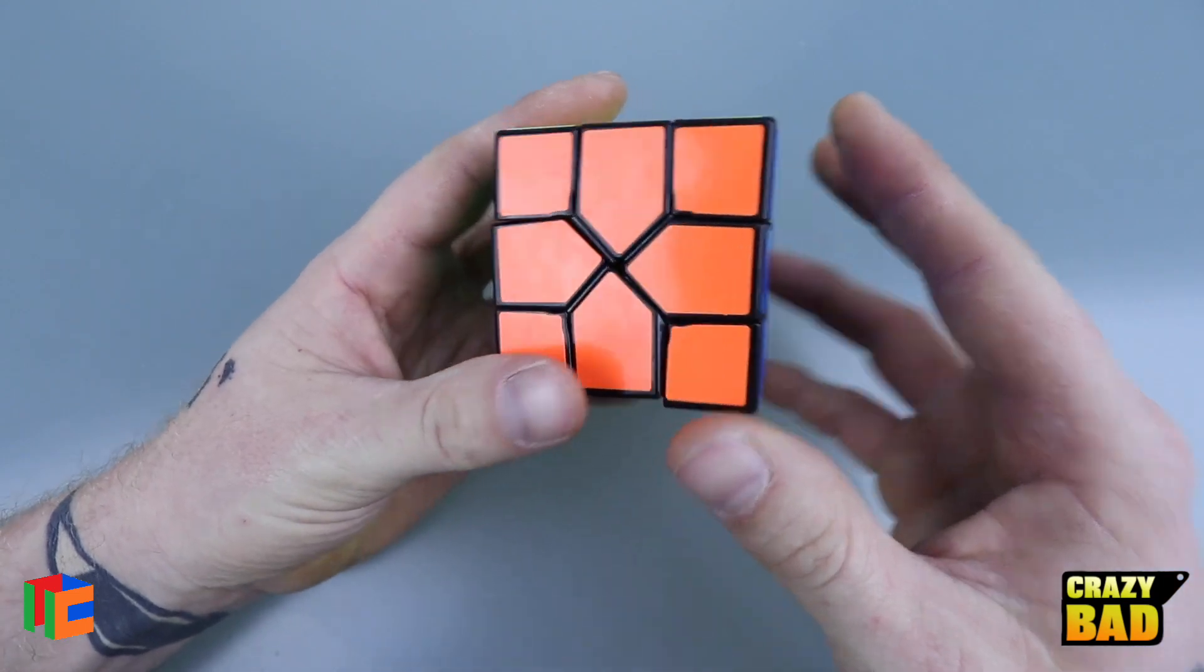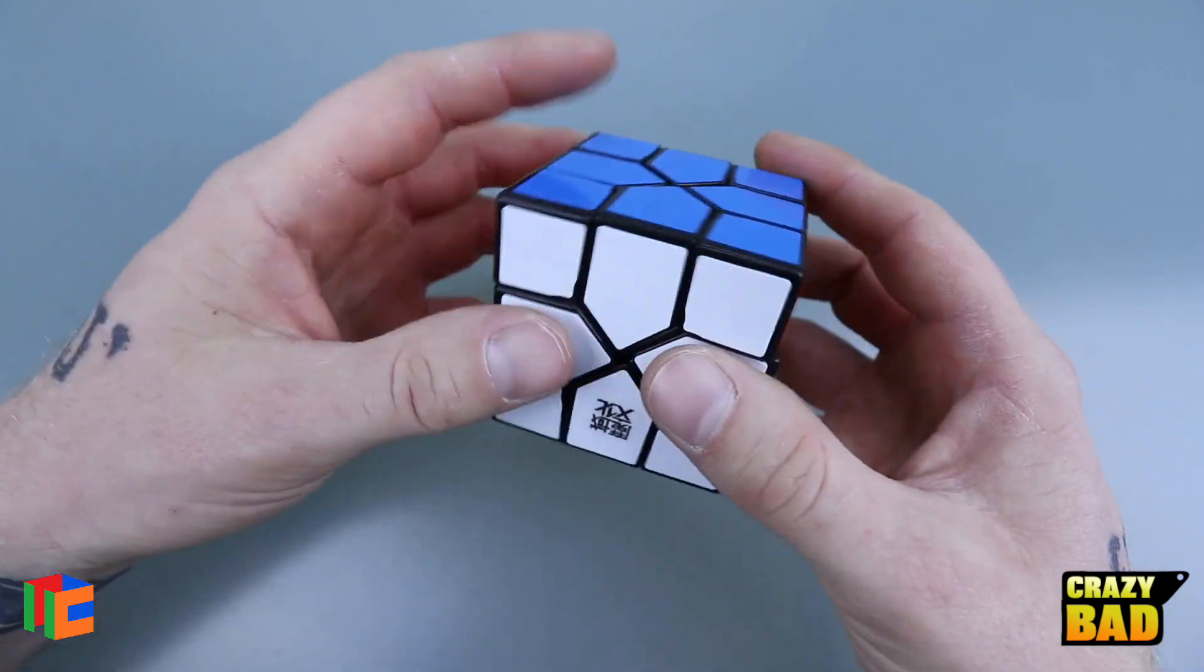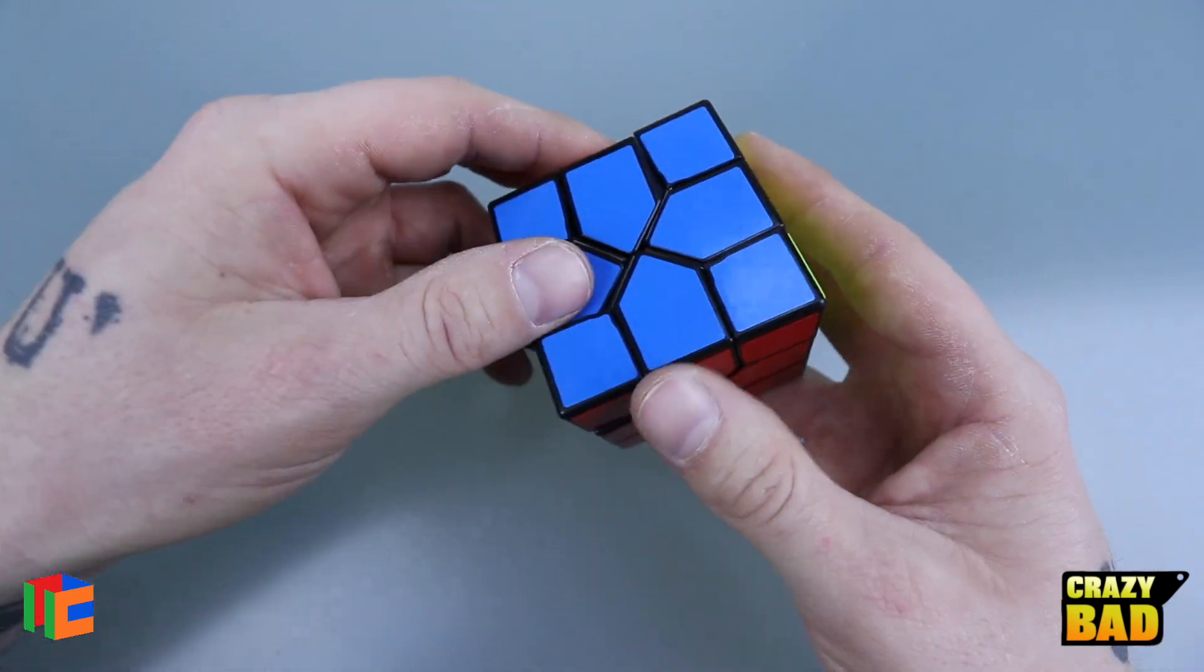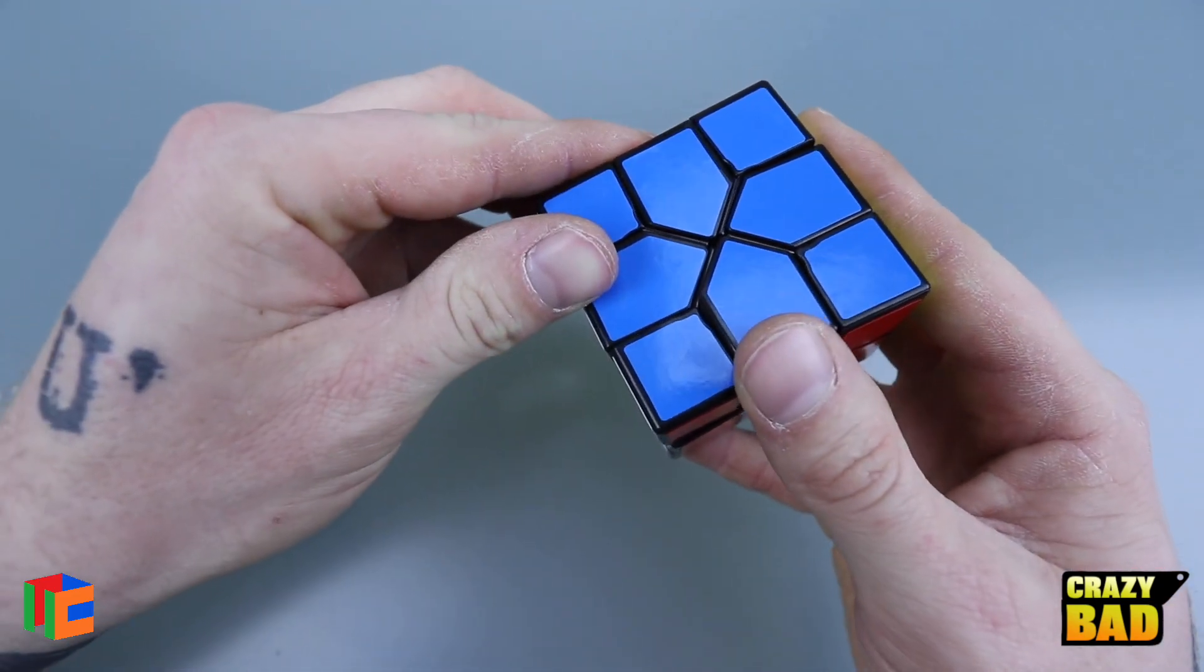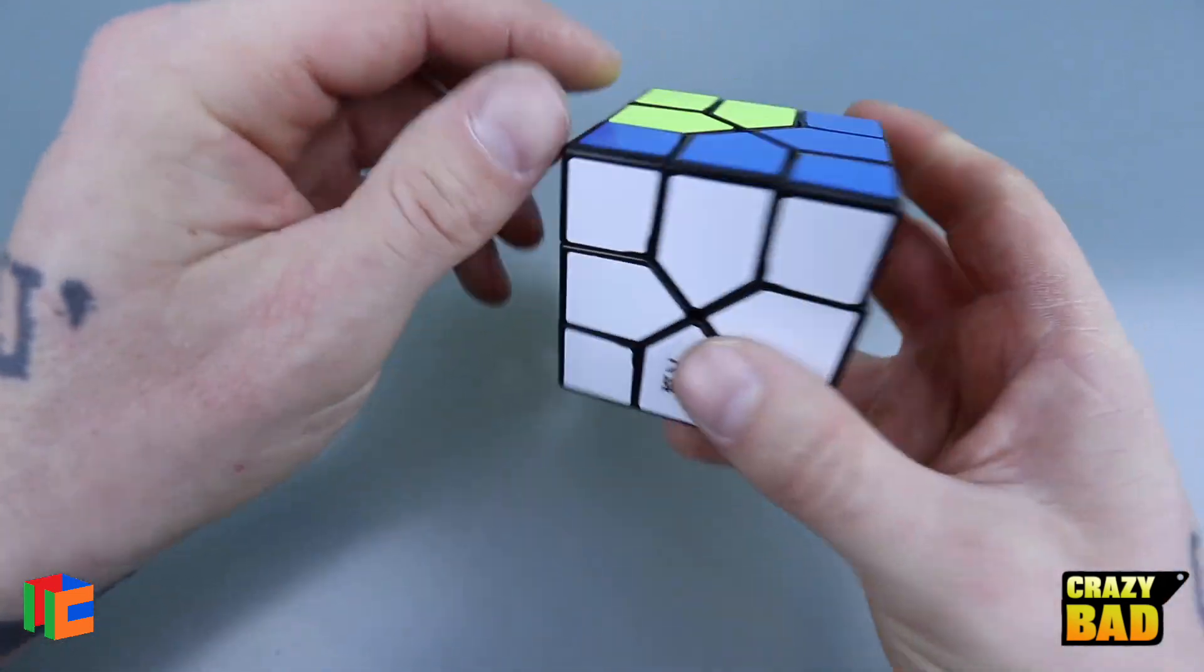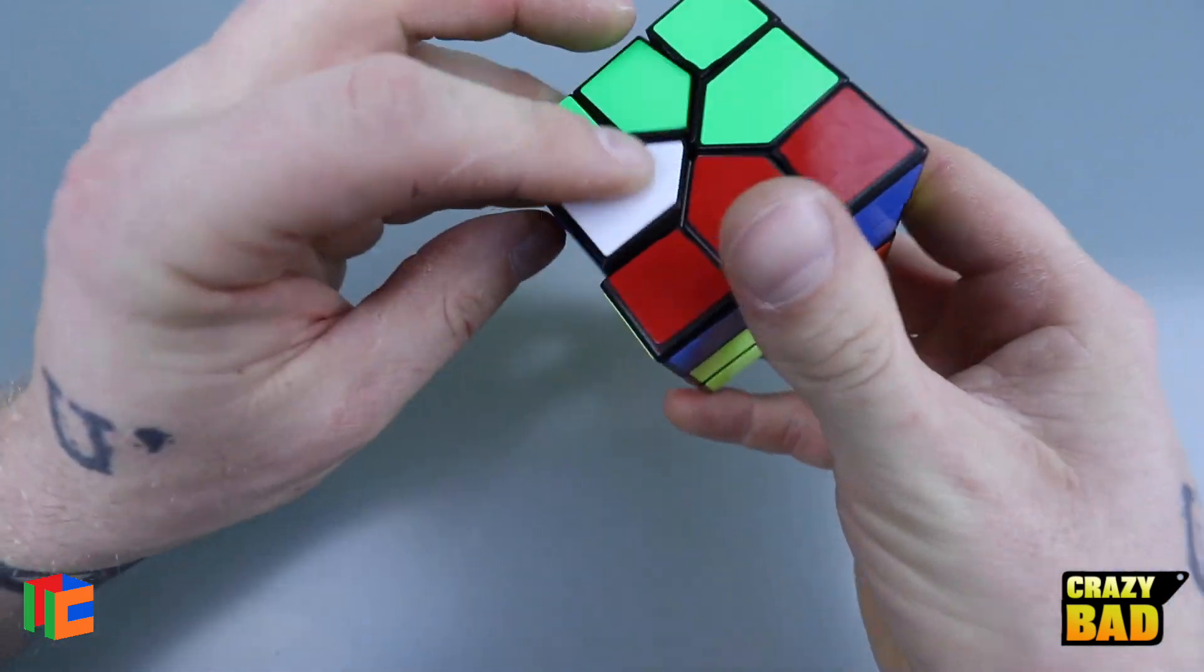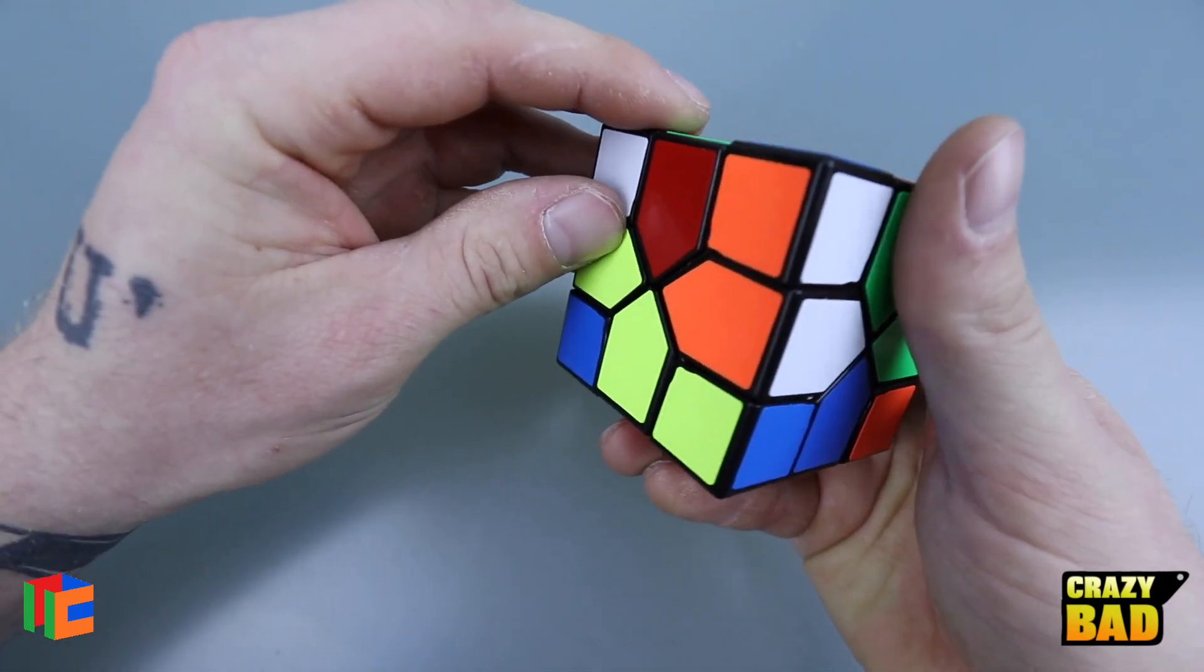It's 61 millimeters across, so it's fairly big. It comes in black, white, and stickerless. Now I chose a black one because I used to like a lot more stickerless puzzles, but now I'm starting to go back to black puzzles. Quite a bit. Anyways guys, I'm going to go ahead and scramble this thing up because I want to kind of show you guys how this works.